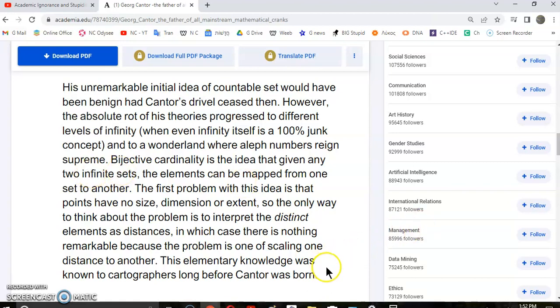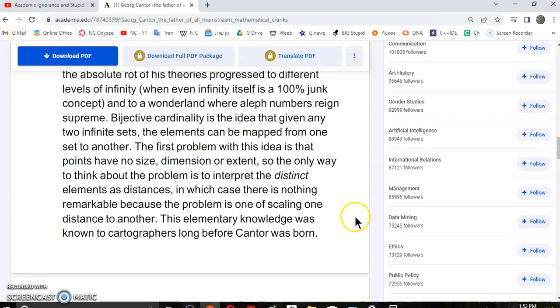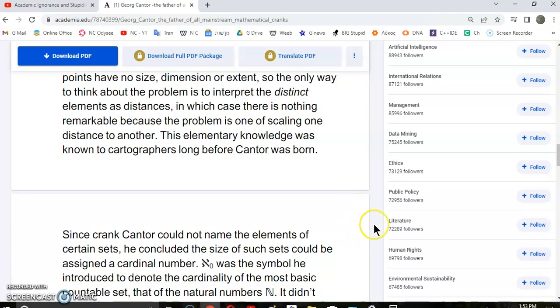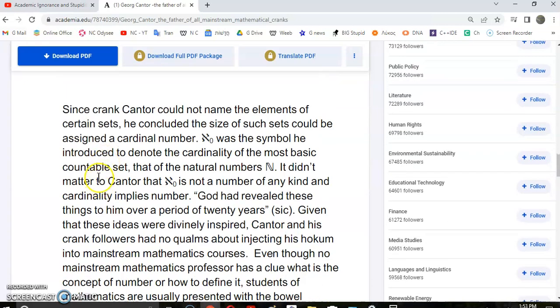Bijective cardinality is the idea that given any two infinite sets, the elements can be mapped from one set to another. The first problem with this idea is that points have no size, dimension, or extent, so the only way to think about the problem is to interpret the distinct elements as distances. In which case, there is nothing remarkable because the problem is one of scaling one distance to another. This elementary knowledge was known to cartographers long before Cantor was born.